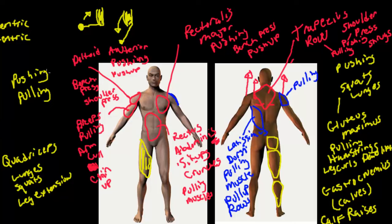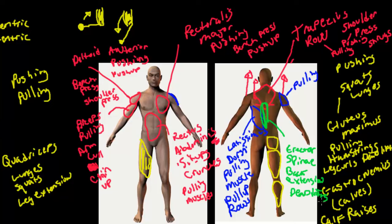The next muscle is the erector spinae, which travels up the outside portion of the spine. It's good for back extensions and deadlifts. It's the antagonist muscle group to the rectus abdominis — the rectus abdominis does a curling action, while the erector spinae allows you to extend the body back out, performing some sort of back extension or deadlift.